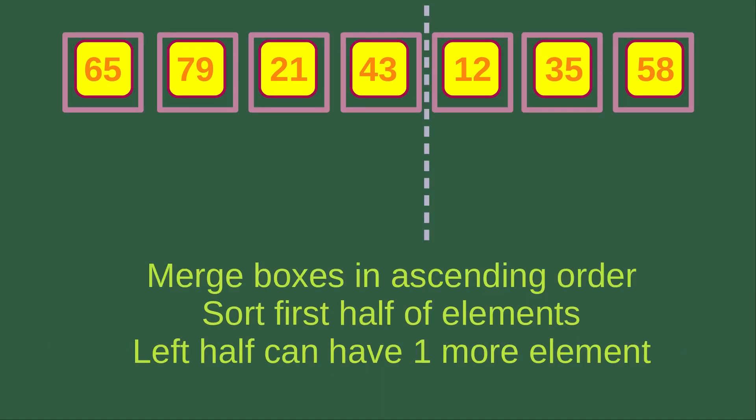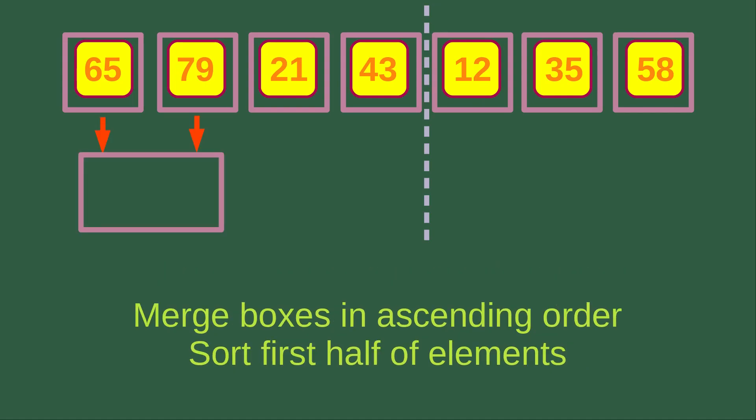Now we can merge the boxes in ascending order. We would sort the first half of elements first. The first half is indicated by the left-hand side of the dashed line. The left half has four elements, while the right half has three elements. Now we are going to merge the boxes in ascending order, focusing on the first half of the elements.